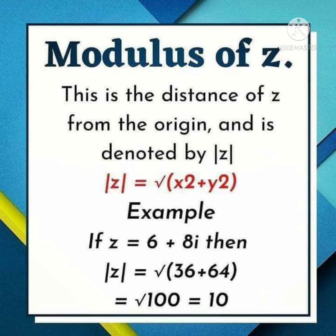The formula for that is square root of x² + y². See the example here. If z = 6 + 8i, then what is the modulus of z? Here x = 6 and y = 8. Therefore x² = 36 and y² = 64. Sum of that is 100 and square root of 100 is 10. So |z| = 10.